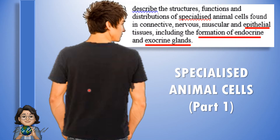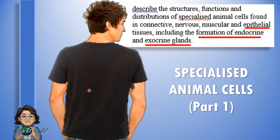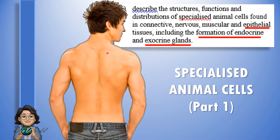Let's look at the syllabus. The syllabus requires you to know about epithelial tissues including the formation of the endocrine and exocrine glands. Now let's remove this tissue. What we see here is the epithelial tissue. Let's go to microscope level to see what cells make up the epithelial tissue.